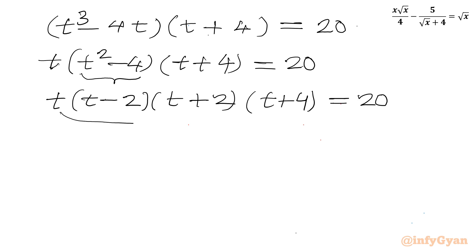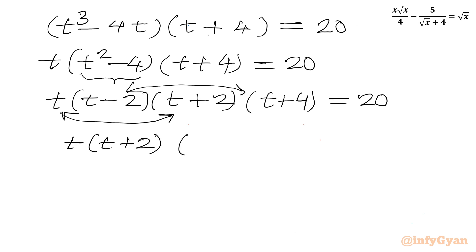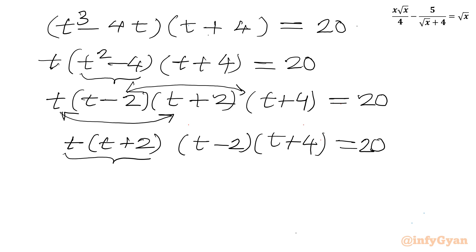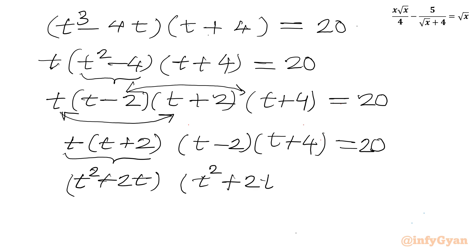Now I will club these pairs together: t(t + 2) and (t − 2)(t + 4). Multiplying t(t + 2) gives t² + 2t. The second bracket (t − 2)(t + 4) expands to t² + 4t − 2t − 8, so t² + 2t − 8, and the product equals 20.